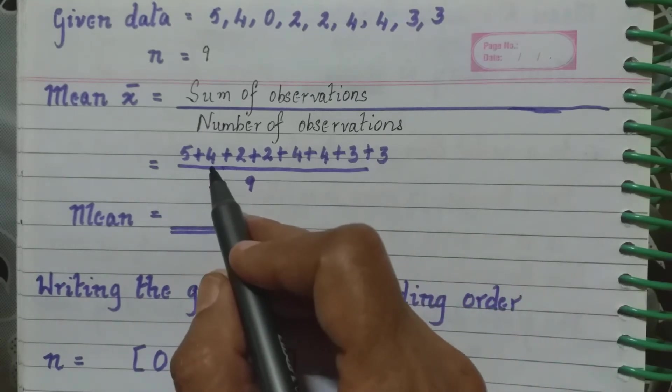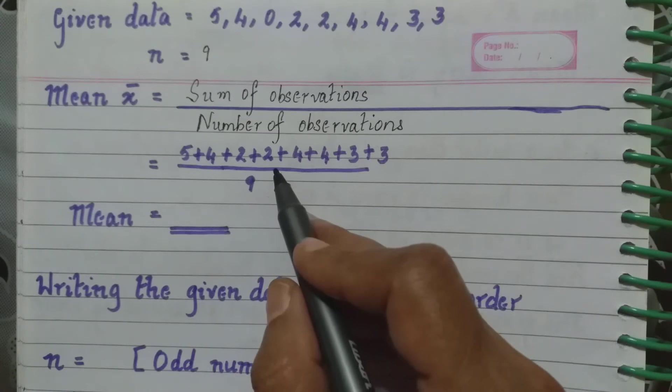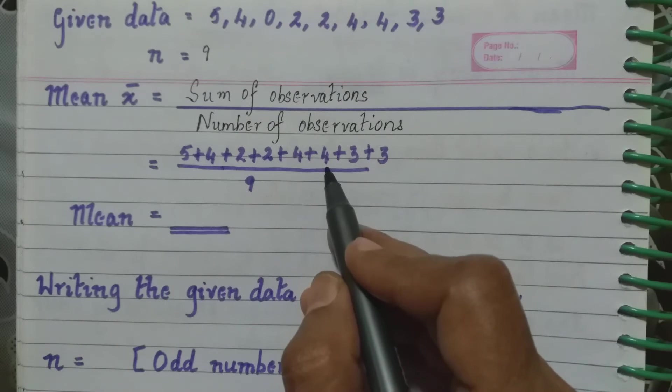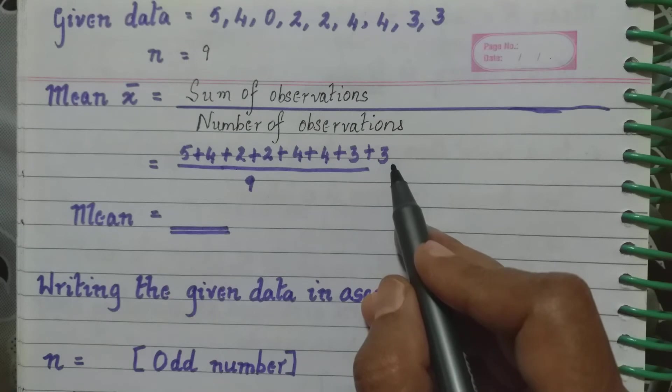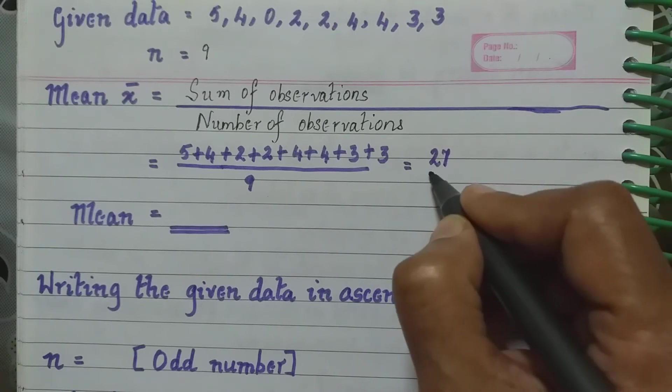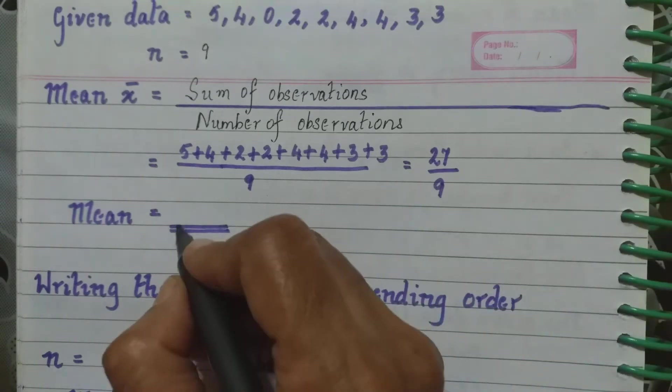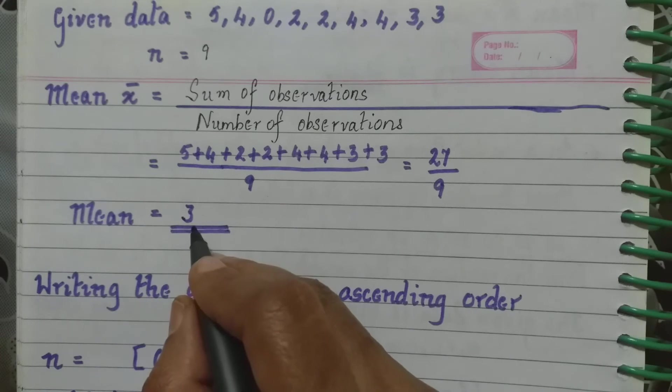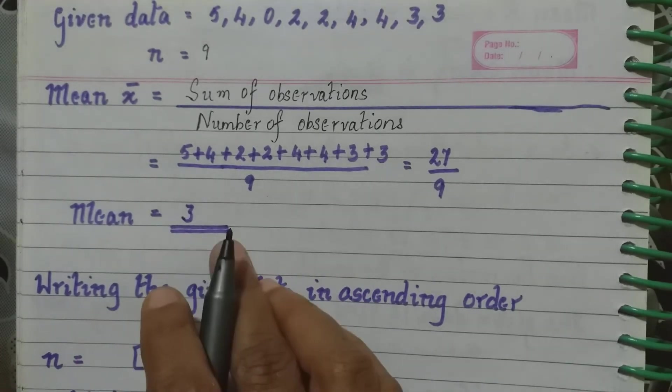Now when we say sum of the observations, we have to add all the scores. Here it will be 5 plus 4 plus 2 plus 2 plus 4 plus 4 plus 3 plus 3 divided by 9. 5 plus 4 is 9, plus 2 is 11, plus 2 is 13, plus 4 is 17, plus 4 is 21, plus 3 is 24, plus 3 is 27. So this is equal to 27 upon 9, which equals 3. Therefore mean is equal to 3.